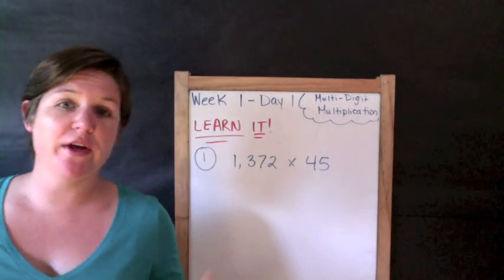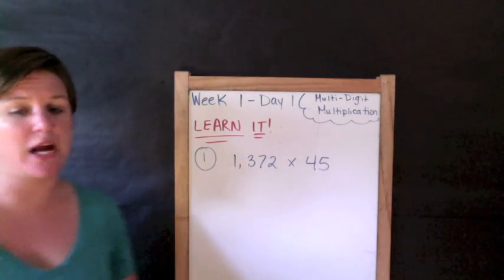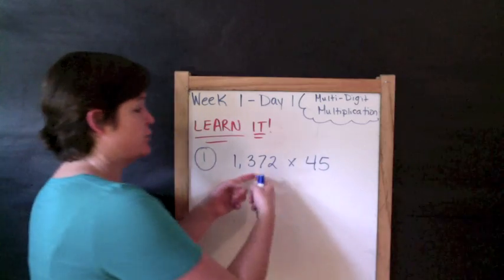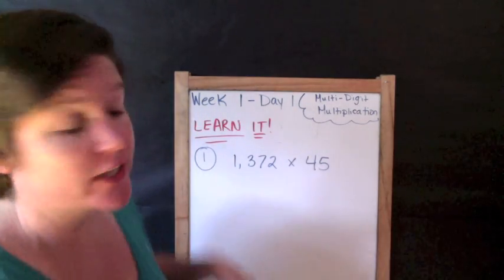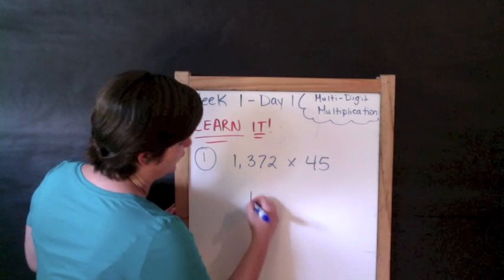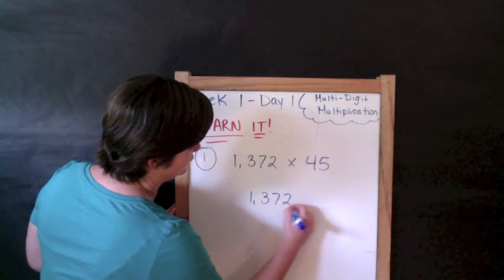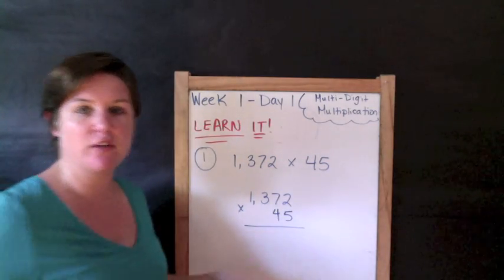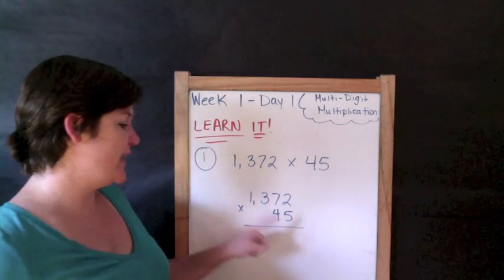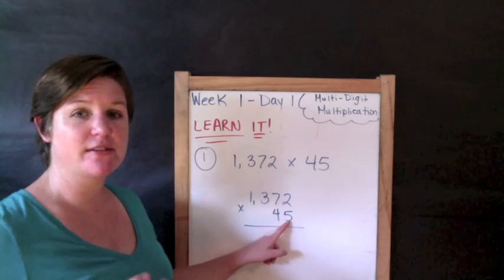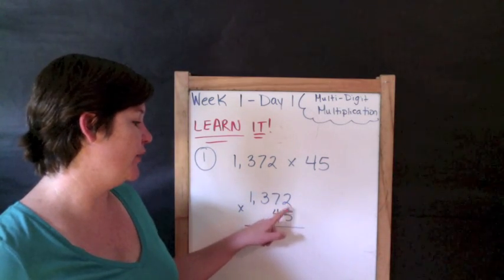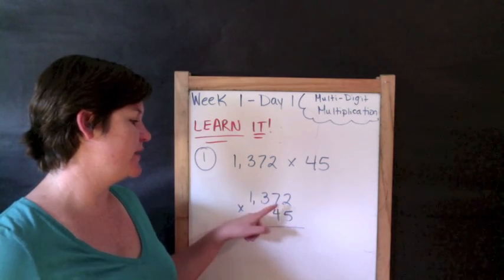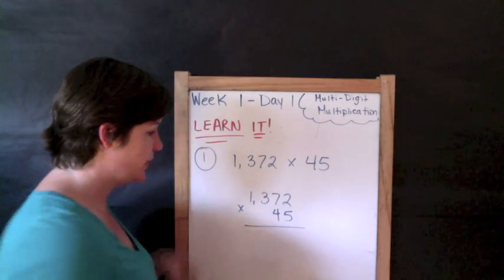Alright people, we're here with number one. We're going to put the boss notes into practice. So I've got 1372 times 45. It's written horizontally, but we need to write it vertically, top and bottom. So 1372 times 45. You line up your digits just like you've been doing this whole time. Alright. So now we're going to take our ones place of the bottom number and multiply it by all the digits on top starting at the right. So five times two, five times seven, five times three, and five times one. Let's do that.